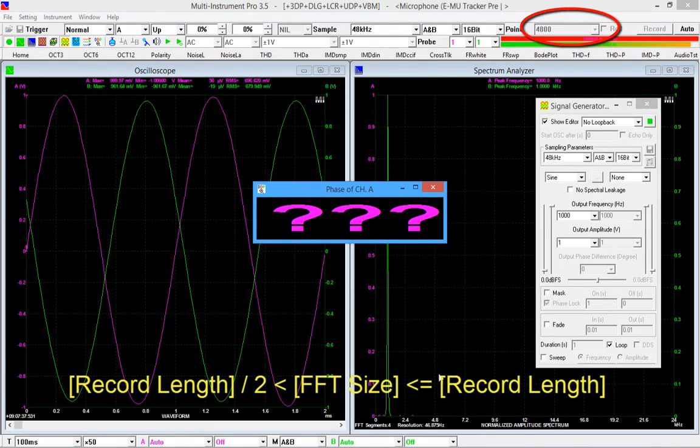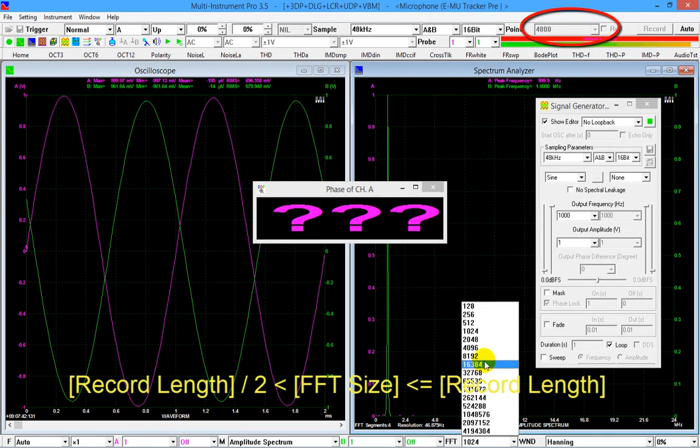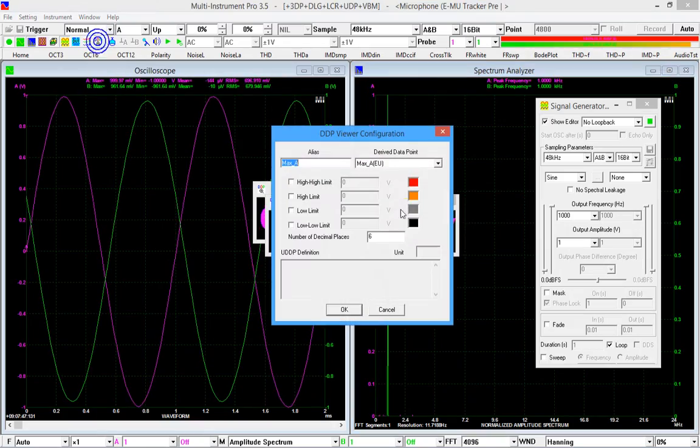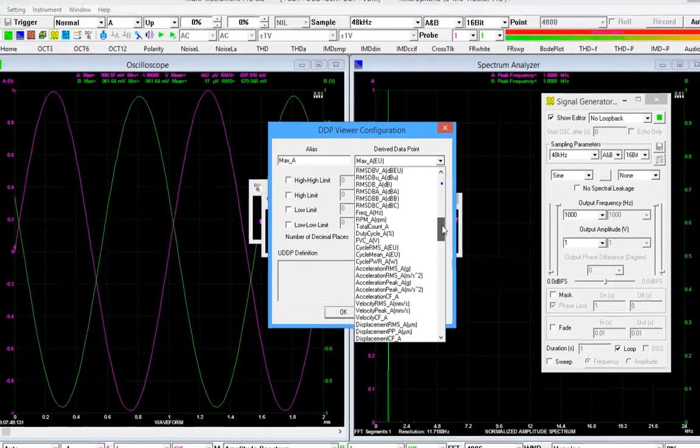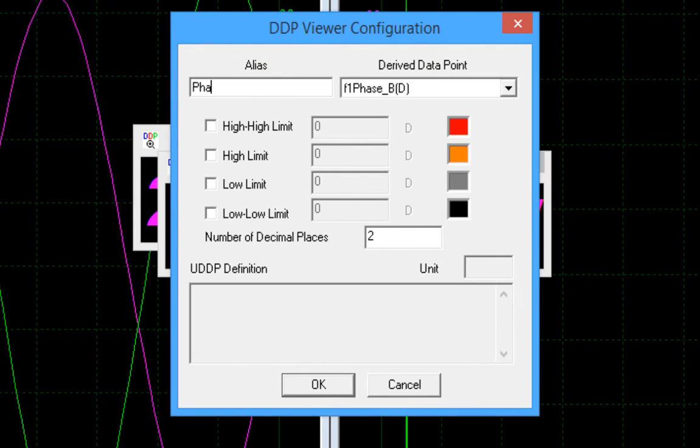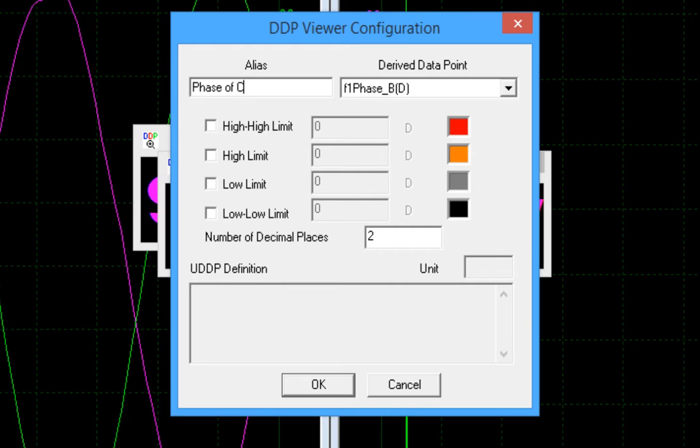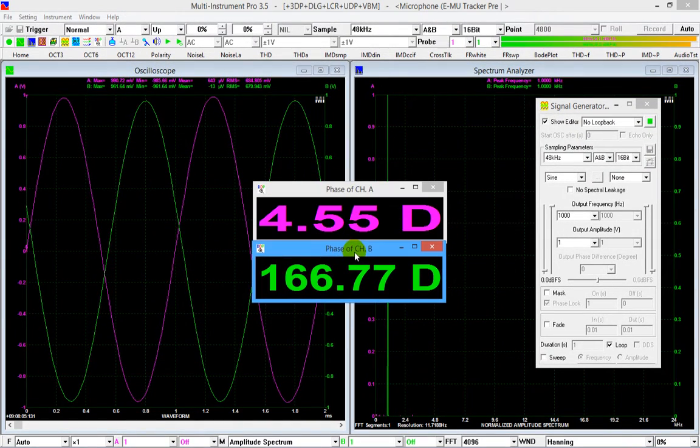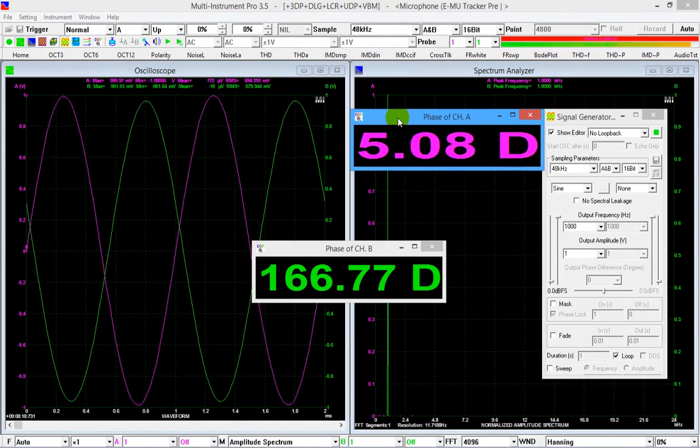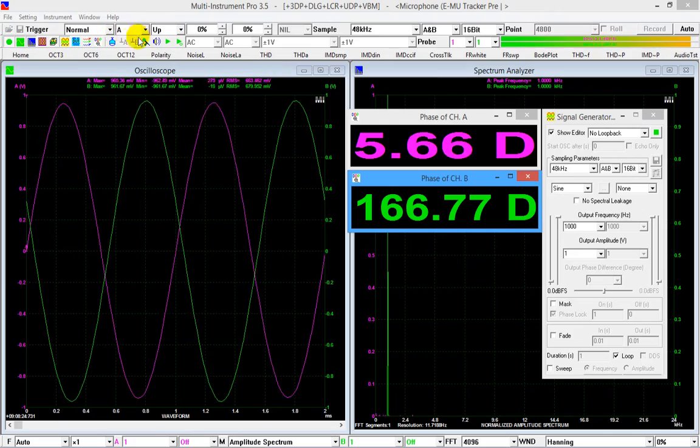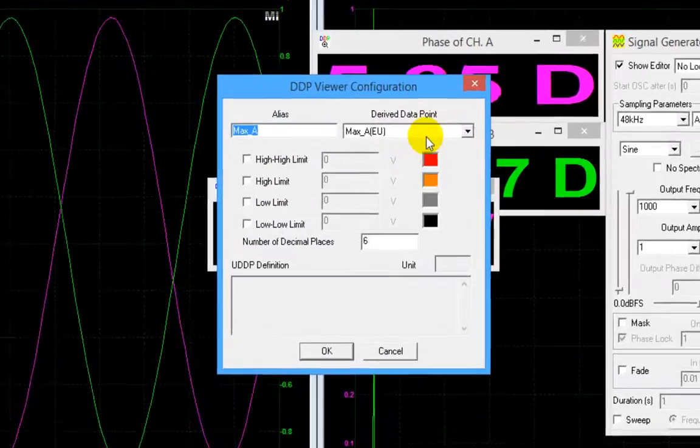In the derived data point selection box, select F1 phase_B, give it a name, phase of channel B. We need to define a derived data point to display the phase difference between the two channels. Click the DDP viewer button again.